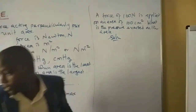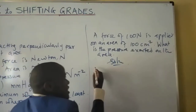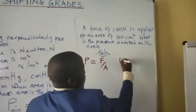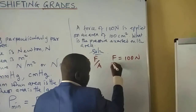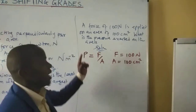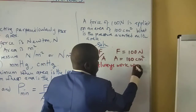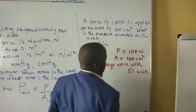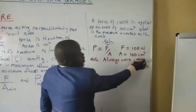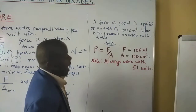Solution: The question asks about the pressure exerted on the area. From the definition, pressure equals force divided by area. We have a force of 100 Newtons acting on an area of 100 centimeters squared. The first thing to note is that we should be working with SI units, so we change all variables to the required SI units.